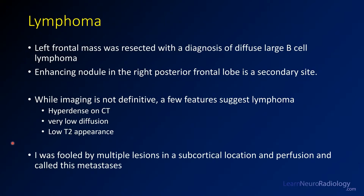In this case we're dealing with lymphoma. We have a left frontal mass that was resected and the diagnosis is large B-cell lymphoma. There is also an enhancing nodule in the right posterior frontal lobe. Personally, when I was reading this case I was a bit fooled because there were multiple lesions in a subcortical location and I called it metastases — but I'll talk about this more.